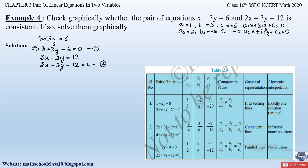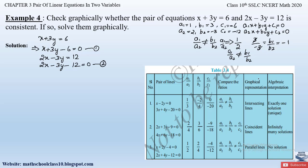Now let us check whether the lines are intersecting with a unique solution. The first condition is a₁/a₂ ≠ b₁/b₂. We find a₁/a₂ = 1/2, and b₁/b₂ = 3/(−3) = −1. We can observe that 1/2 ≠ −1, so a₁/a₂ is not equal to b₁/b₂.